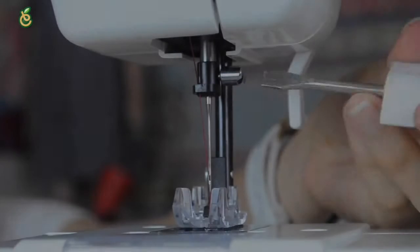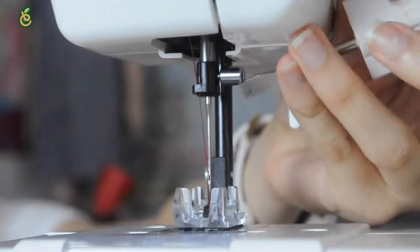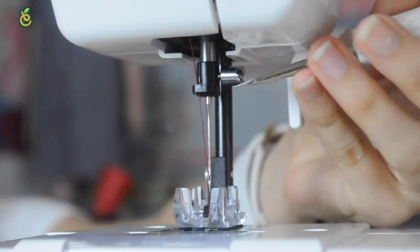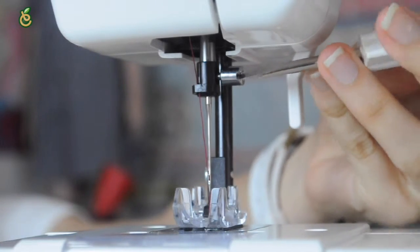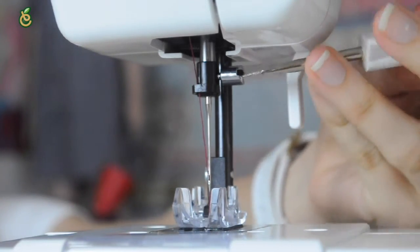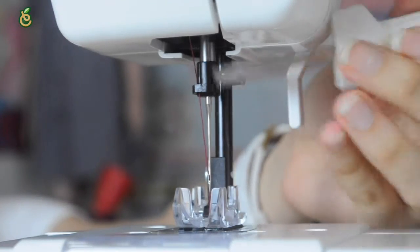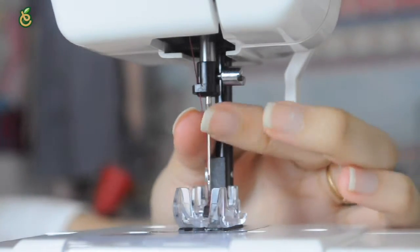Changing the needle: Disconnect the AC adapter from the machine. Raise the needle to its highest position and lower the presser foot. Loosen the needle clamp screw by turning it counter-clockwise. Remove the needle.